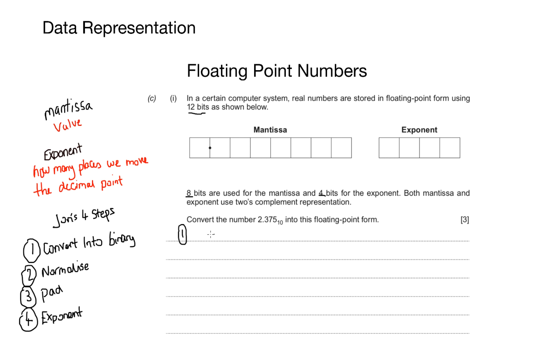Let's have a look at that four steps applied in a question. Step one is nice and straightforward. I'll convert 2.375 into binary, and that's 10.011 because I need a 0.25 and 0.125 to make my 375 at the end. Step two is to normalize the number. I'll normalize my number by placing a 0 and a point at the front. Now notice I'll keep two decimal places in here. Don't worry about that, we'll fix that later.